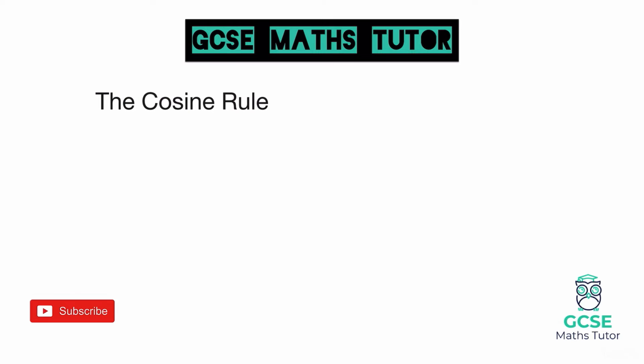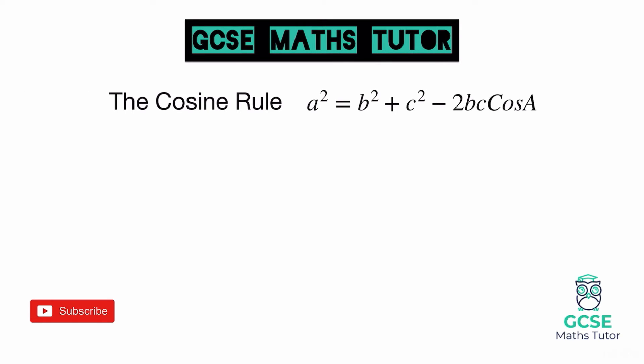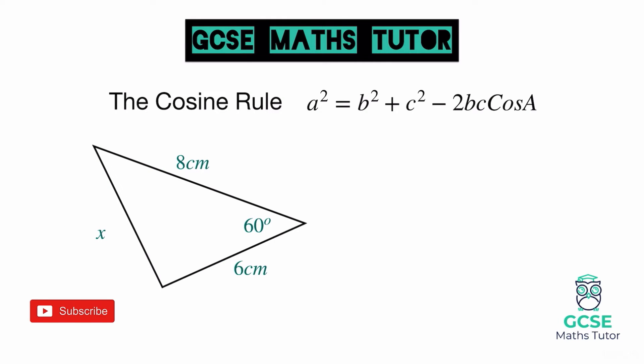Our next formula is the cosine rule: a squared equals b squared plus c squared minus 2bc cos A. This is again for non-right-angled triangles, but how does it differ from the sine rule? When we look for pairs of opposites, opposite the 8 cm and opposite the 6 cm there is no angle, so we do not have pairs of opposites for those sides. Opposite the 60-degree angle is the length we're looking for — that is one pair of opposites — but there is nothing opposite the 8, so this is our indication to use the cosine rule. I always label the angle I'm using as big A and its opposite side as little a.